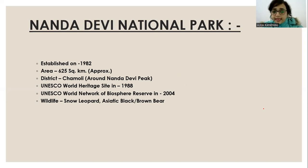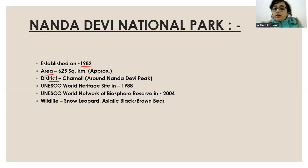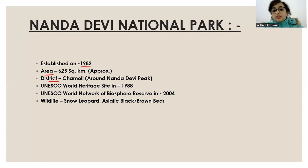Nanda Devi National Park is the second national park. It was established in 1982. The approximate area coverage is 625 square kilometers. The district is Chamoli, around the Nanda Devi Peak. UNESCO World Heritage Site status was granted in 1988, and it was named in the UNESCO World Network of Biosphere Reserves in 2004.